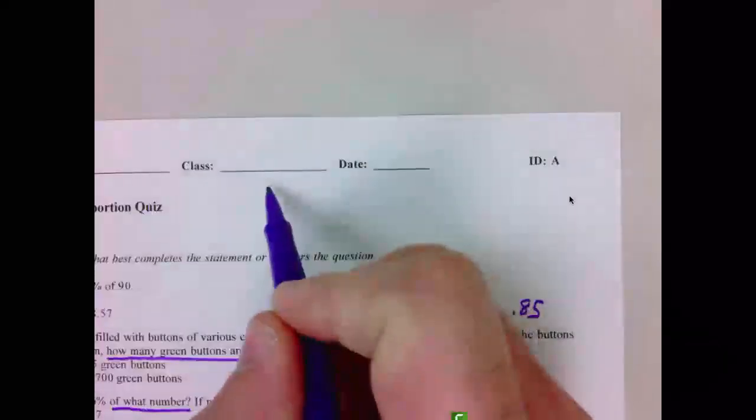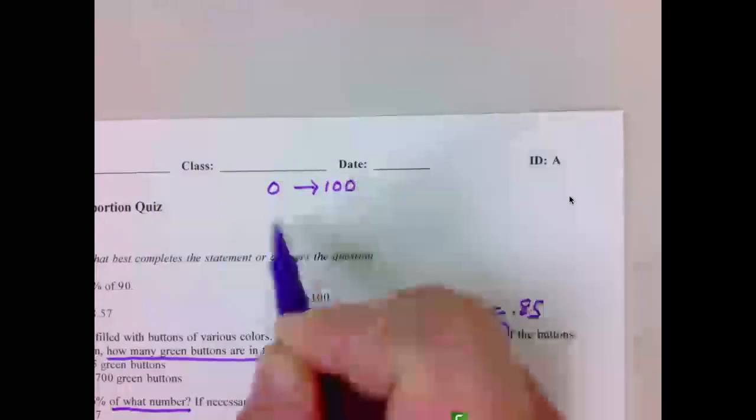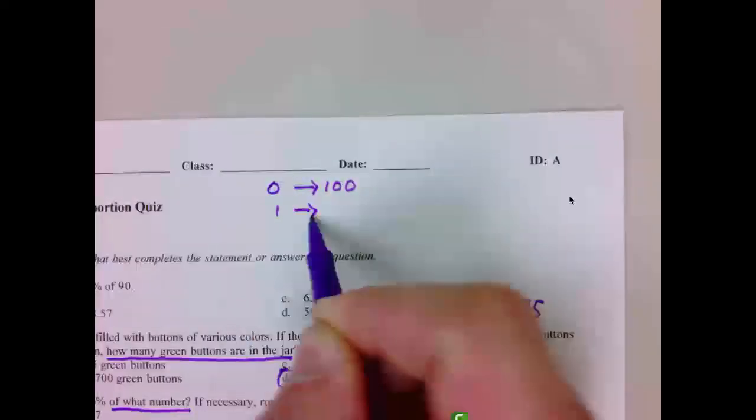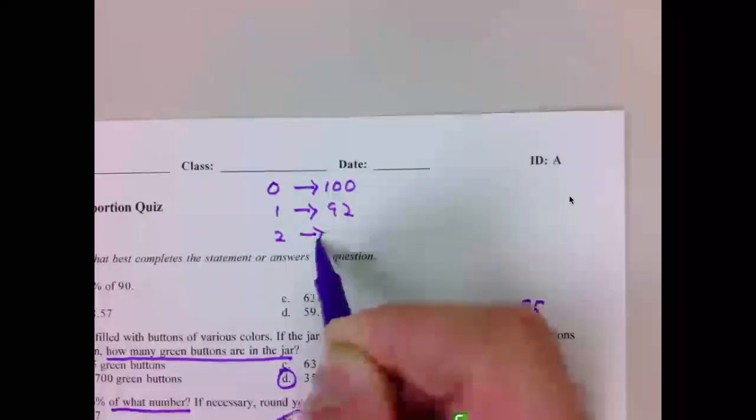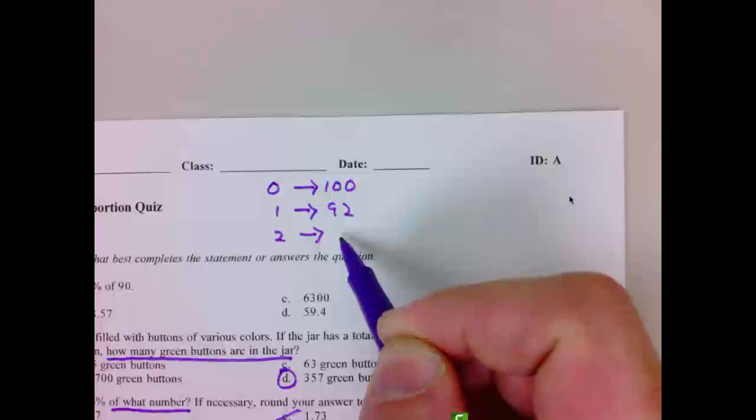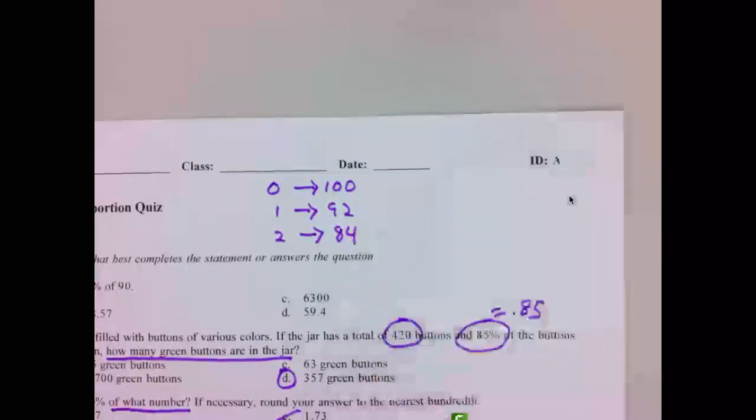So if you missed 0, obviously you have a 100. If you missed 1, you'll have a 92. If you missed 2, 2 times 8 is 16—100 minus that would be 84, and so forth.